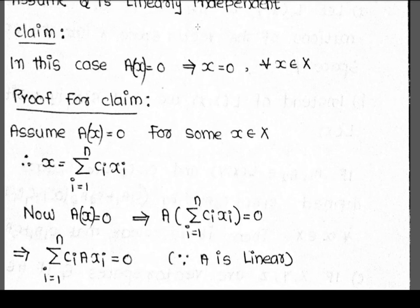For the one-to-one condition, we use the result: A(x) = 0 implies x = 0, for all x belonging to X. That is, A(x) = 0 only when x = 0.